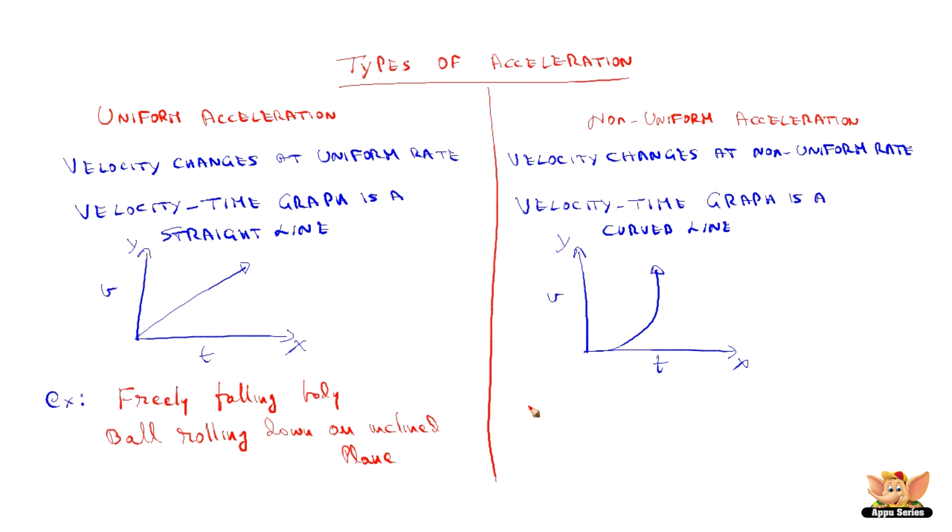Under non-uniform acceleration, there is a change in velocity. An example is the speed of a racing car, which keeps changing with time at a non-uniform rate.